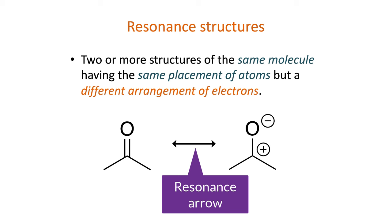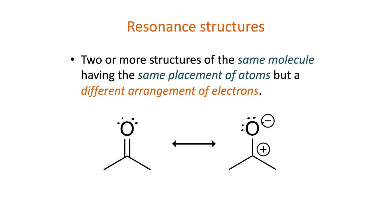We can use curved arrows to show the difference in electron arrangement between the two structures. First, draw in all the non-bonding electrons, or lone pairs, and atoms near parts of the structure that have changed.